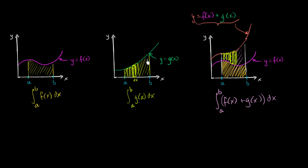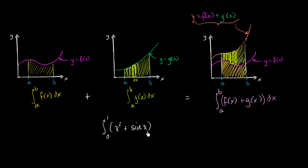So this area right over here — and I'm obviously not doing a rigorous proof, just giving you the intuition — is the exact same thing as the area under g of x. Therefore, the definite integral from a to b of f of x plus g of x dx is just going to be the sum of the two separate definite integrals. This is one of the most powerful principles of definite integrals. For example, the integral from zero to one of x squared plus sine of x is the same as the integral from zero to one of x squared dx plus the integral from zero to one of sine of x dx.